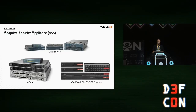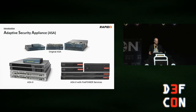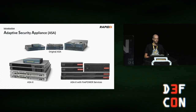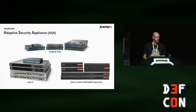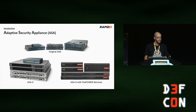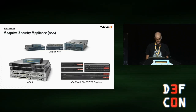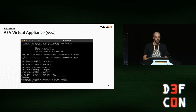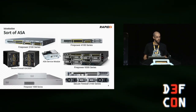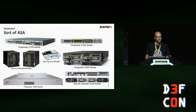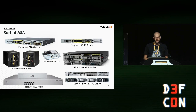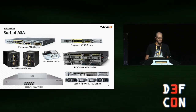You might be asking yourself: what is an ASA? These are Cisco Adaptive Security Appliances. At the top you see the original ASA released some 15 years ago, followed by the ASA-X, and more recently the ASA-X with Firepower Services. The ASA also comes in a virtual appliance form factor known as ASAv, which can run the same operating system — ASA software — used by the previously mentioned ASA models.